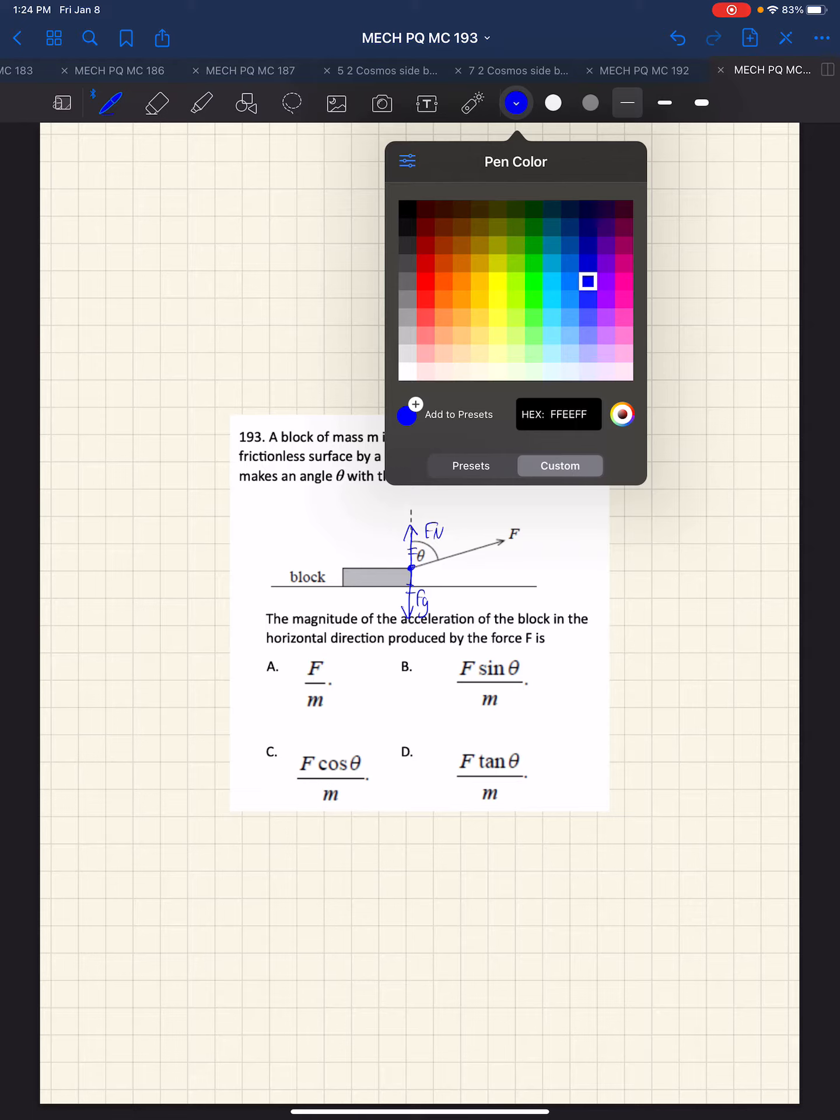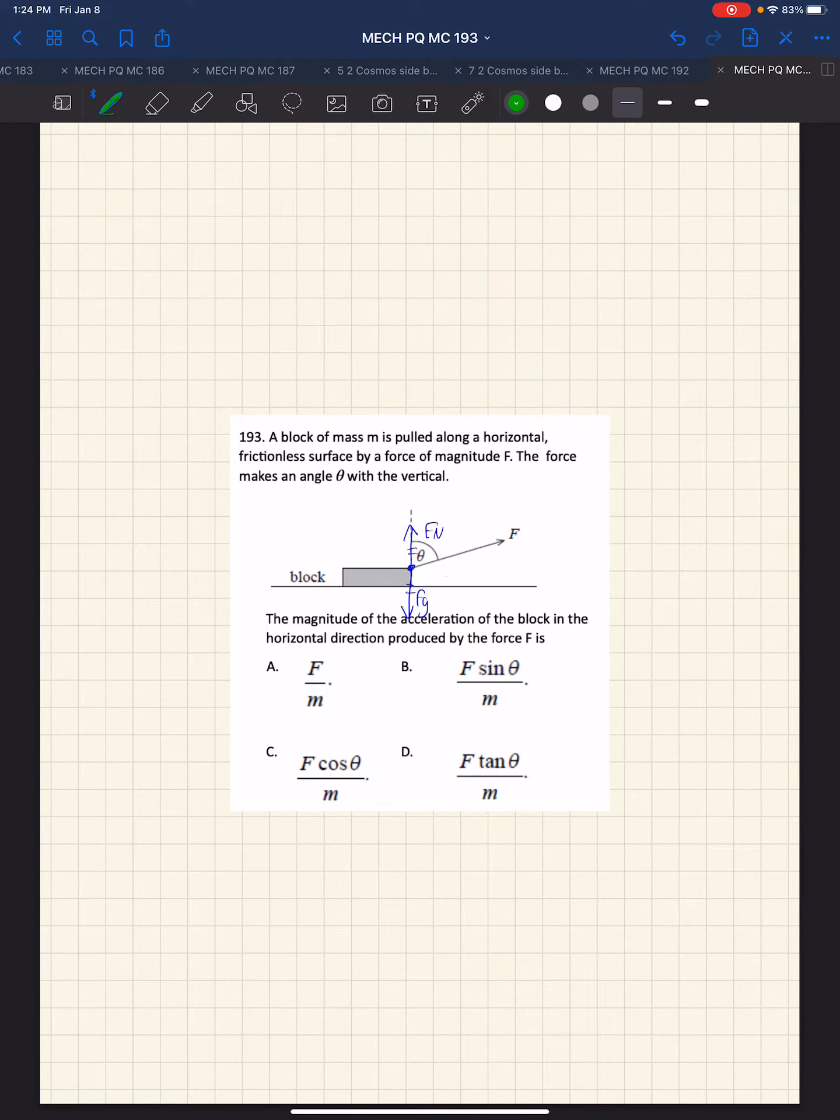Which means we would need to find the components where this is a 90 degree angle, so this is Fx and this is Fz. And we don't know if there's any friction, but if there were friction it would be in that direction. Block is pulled along the horizontal frictionless surface, so no friction.